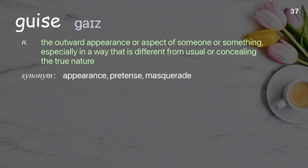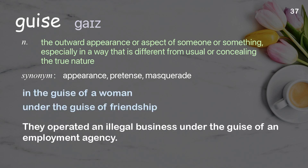Guise: the outward appearance or aspect of someone or something, especially in a way that is different from usual or concealing the true nature. Examples: in the guise of a woman, under the guise of friendship. They operated an illegal business under the guise of an employment agency.